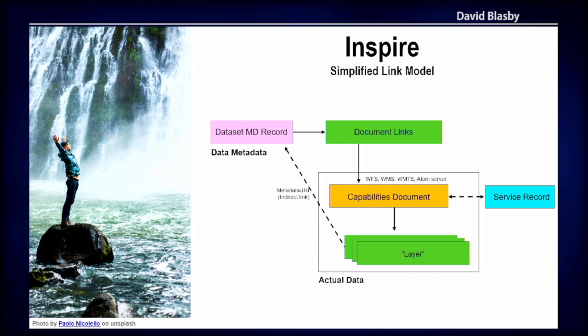INSPIRE realized this is pretty complicated and they're in the process of moving to a simplified link model. The big difference is there is a direct link to the capabilities document right inside the dataset metadata record. It's totally easy — you don't have to go searching, you just follow the link. You can go directly from the metadata record to the capabilities document without having to harvest and search through all your service documents and do a ton of processing.